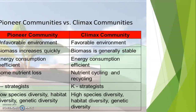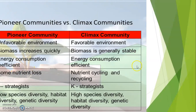Growth curve is exponential in pioneer and logistic in climax. Vertical stratification follows an increasing trend from pioneer to climax. Survivorship curve: pioneer follows Type 3 survivorship curve, and climax follows Type 1 survivorship curve. Regarding resource utilization, pioneer communities have high utilization power and are fast, while climax communities are slow. Seed size is small in pioneer but number is more; in climax, seed size is large but number is less.